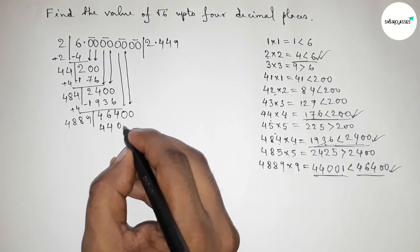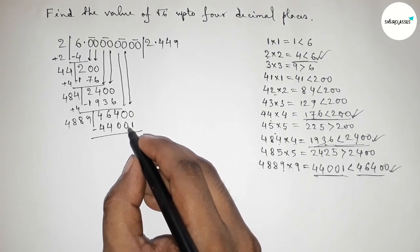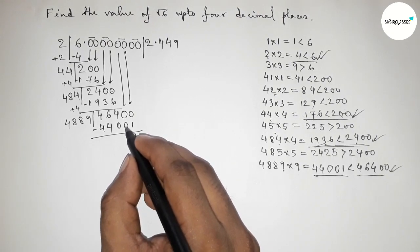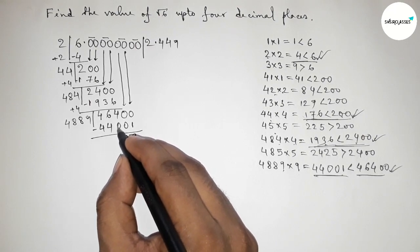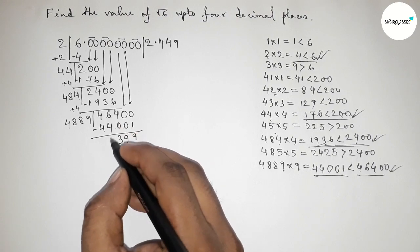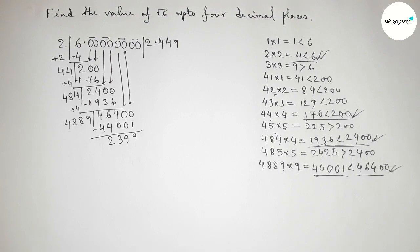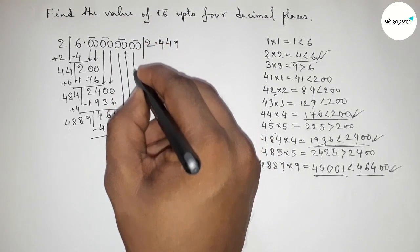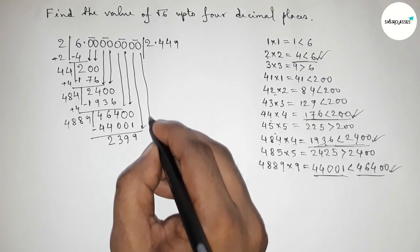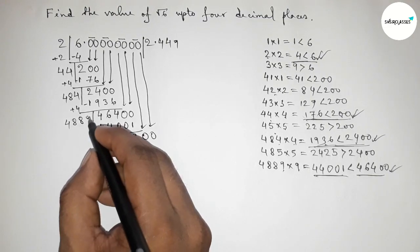Putting 9 here and writing down 44001. Subtracting: 46400 − 44001 = 2399. Now write down the last pair of zeros and draw a division line. The last digit is 9, so we add 9 + 9 = 18, carry 1, giving 98494.